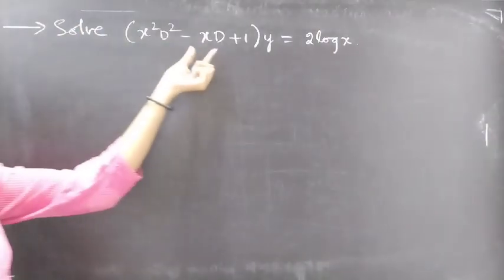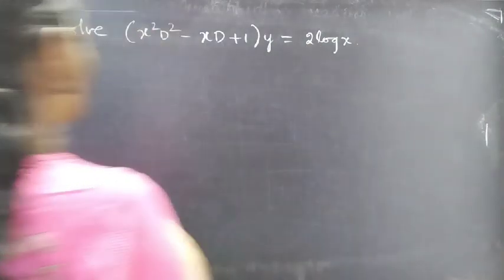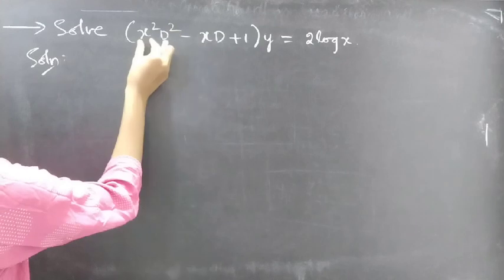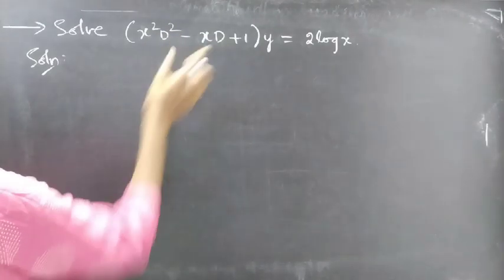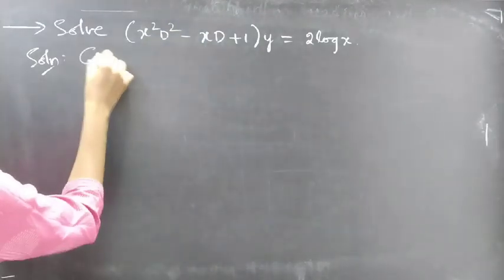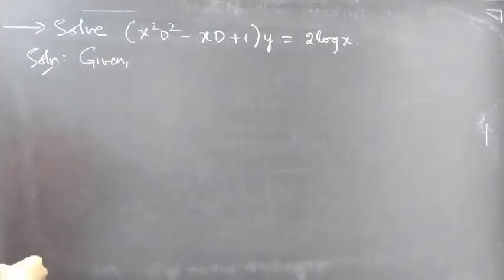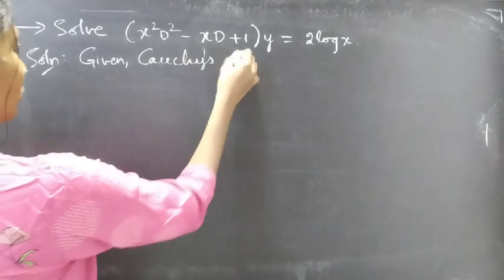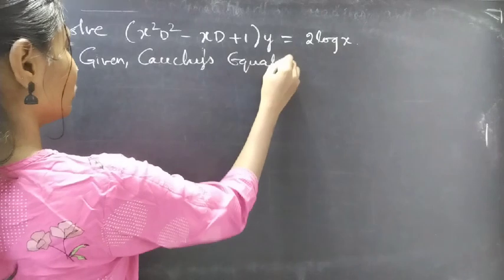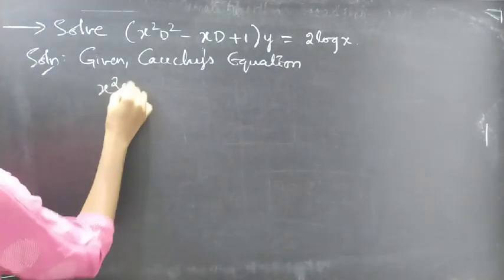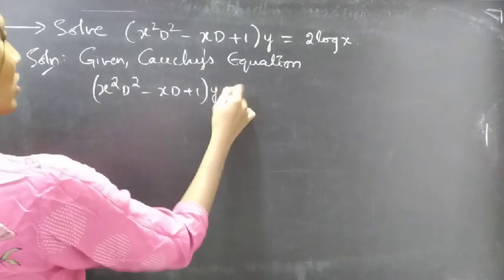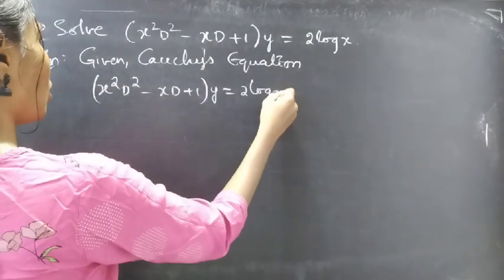Problem: solve x squared D squared minus x D plus 1, all multiplied into y, equals 2 log x. We are given a differential equation with variable coefficients, and this is also a Cauchy's equation. We are going to reduce this to a differential equation with constant coefficients by making a substitution.